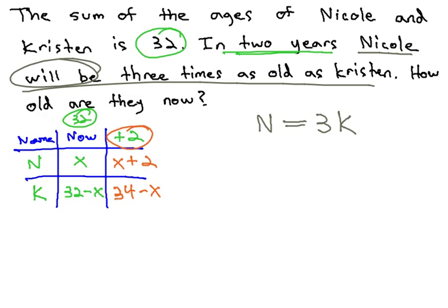Again, we make this equation without worrying about the time change or the table, because we're going to marry the table and the equation at this point, by replacing the n with what n is in the future, x plus 2 equals 3k, and k in the future is 34 minus x.